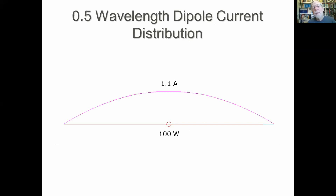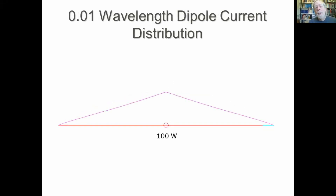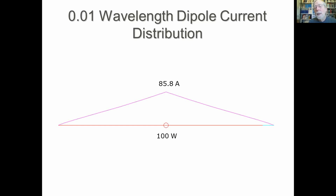The current distribution on the half-wave dipole is a piece of a sine wave. If we put 100 watts in, we get about 1.1 amps flowing. But if we put 100 watts into the 1/100th wavelength dipole, the current distribution is more linear — and we've got 85 amps flowing compared to about one amp in the half-wavelength dipole. That's going to be devastating for I²R loss.